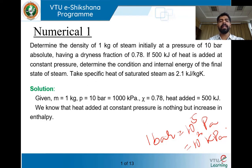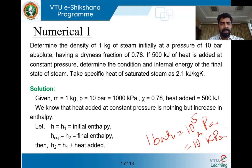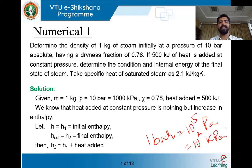x is given as 0.78 and heat added to the system is 500 kJ. After adding 500 kJ, we need to find the condition of the steam and the internal energy of the final state. Let H1 be the initial enthalpy before adding 500 kJ, and H2 be the final enthalpy after adding 500 kJ. So H2 = H1 + 500 kJ. H1 is the heat content or enthalpy before adding, H2 is the enthalpy after adding.